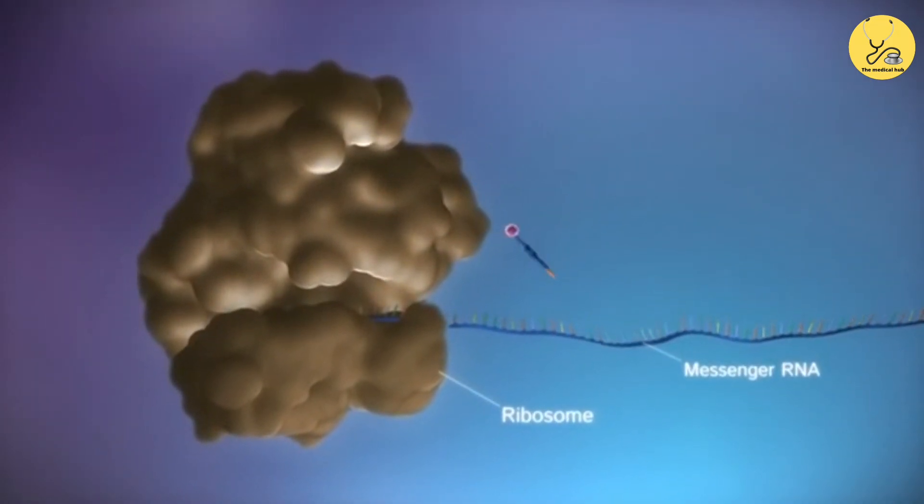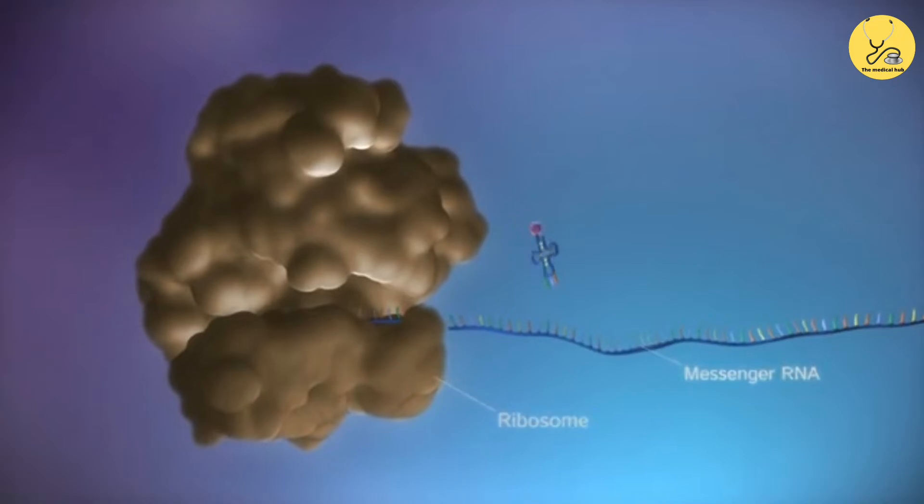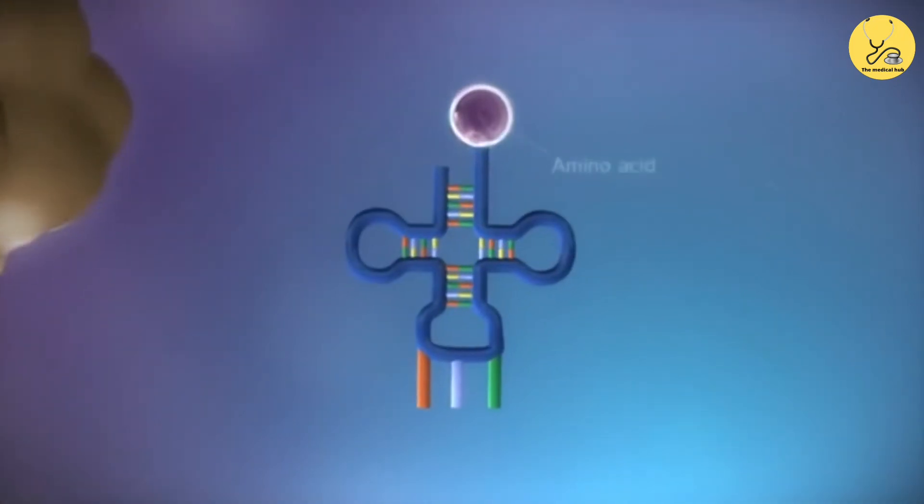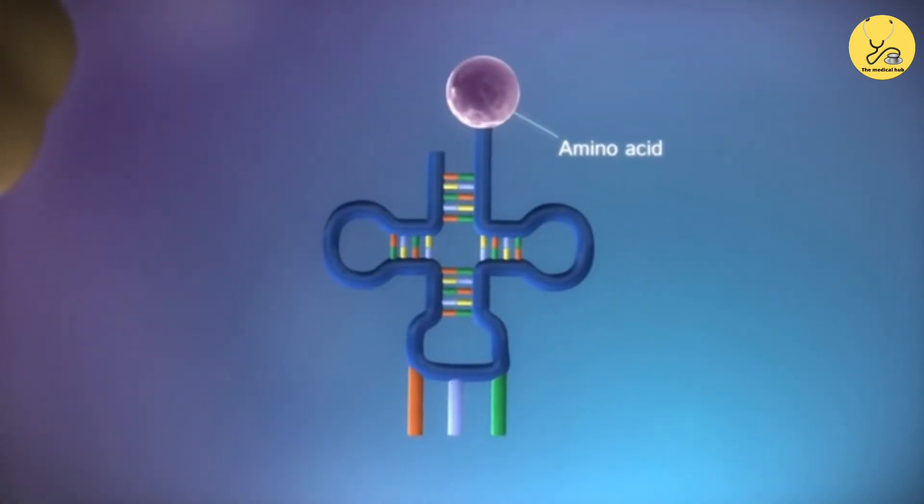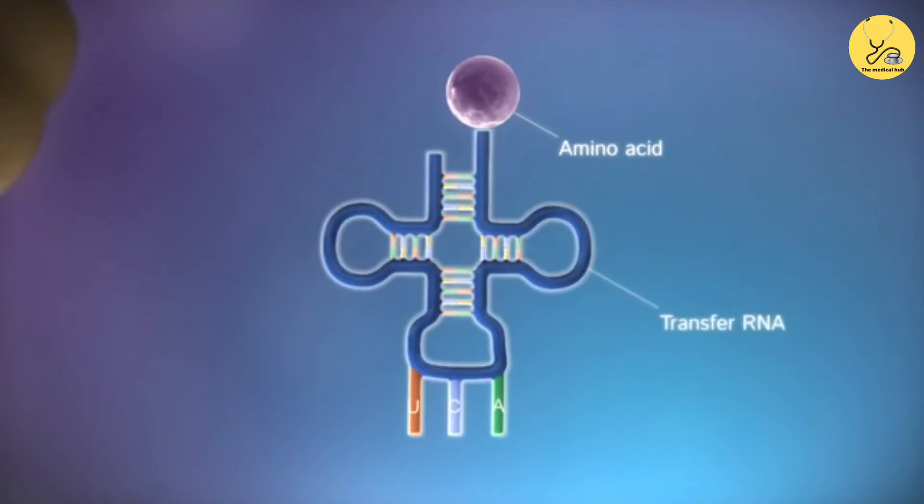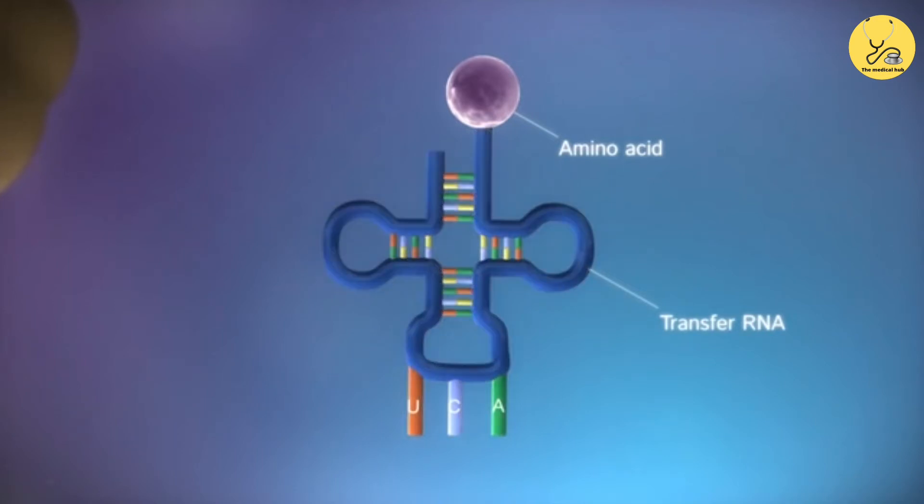The ribosome reads the code in the messenger RNA to produce a chain made up of amino acids. There are 20 different types of amino acid. Transfer RNA molecules carry the amino acids to the ribosome.